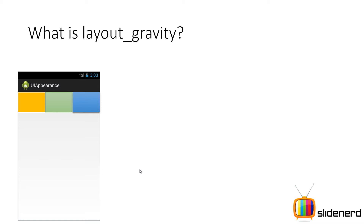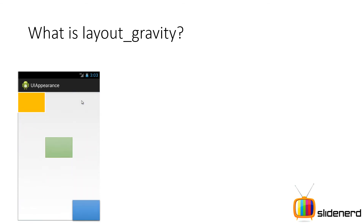Let me show you the different places where you can put your views. This yellow, green, and blue boxes actually represent some views — they can be anything: buttons, text views, edit text. The yellow control can be placed all the way from the top to the bottom, and the green and blue controls can also be placed anywhere from top to bottom without changing the columns. In a horizontal linear layout, things are arranged in columns, and layout gravity values do not change columns. That's very important.